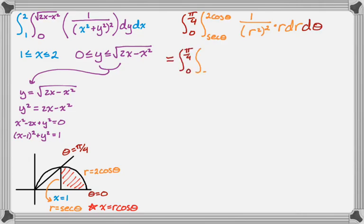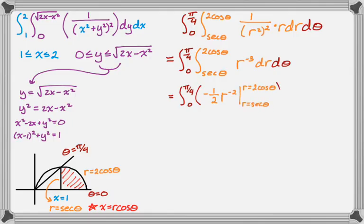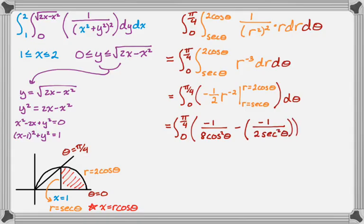So this can be rewritten. So now you can tell we're going to end up with a lot of trig stuff involved here. So r to the negative third, so that's easy enough to integrate, so that's plus 1 times the reciprocal, so that's going to give me negative 1 half r to the negative 2, from secant to 2 cosine theta, and then ultimately d theta. So let's plug in, and I get this, so that's going to be negative 1 over 8 cosine squared of theta, and then minus, and then negative 1 over 2 secant squared theta. So I'm showing a lot of steps so that I don't make mistakes.